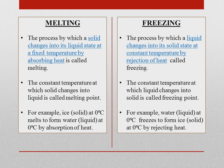The process by which a solid changes into liquid state at fixed temperature by absorbing heat is called melting. While the process by which a liquid changes into solid state at constant temperature by rejection of heat is called freezing. The constant temperature at which a solid changes into liquid is called melting point, while the constant temperature at which a liquid changes into solid is called freezing point. The melting point and freezing point of a substance are the same. For example, ice changes into water at 0°C by absorption of heat, and water changes into ice at 0°C by rejecting heat.